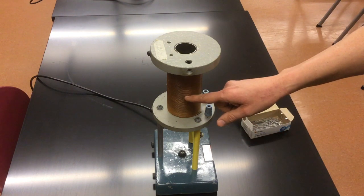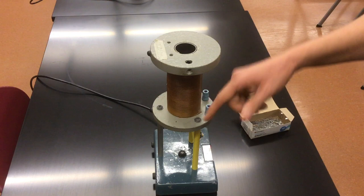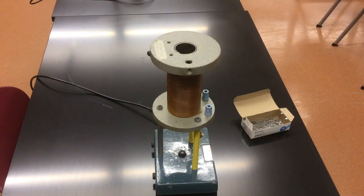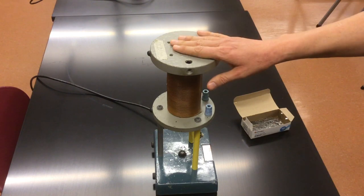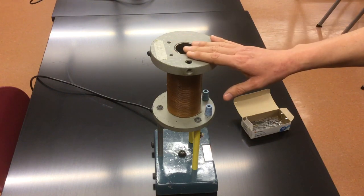and that means the coil acts like an electromagnet whose field sometimes points up, sometimes points down, and it's a rather strong external alternating magnetic field.